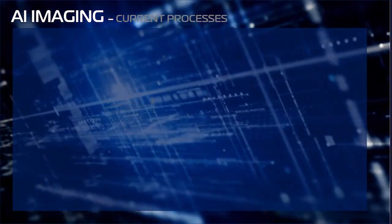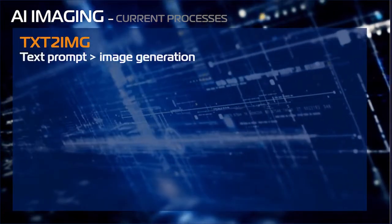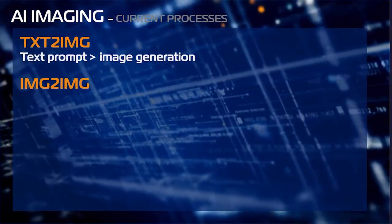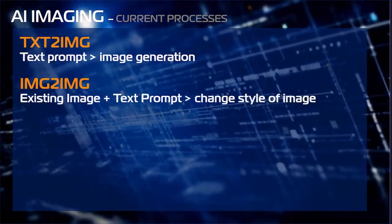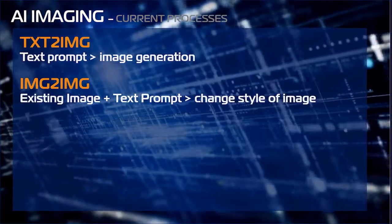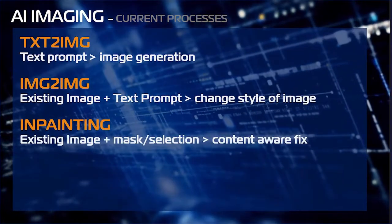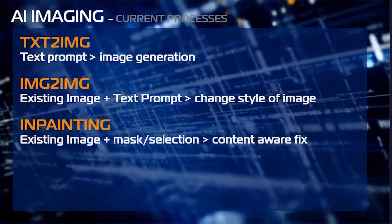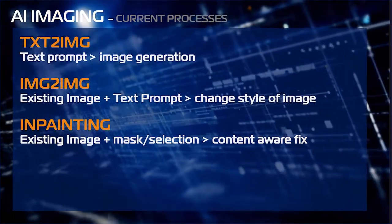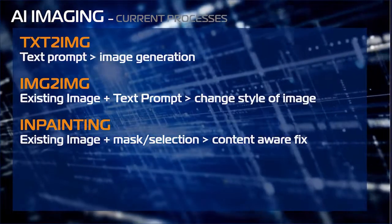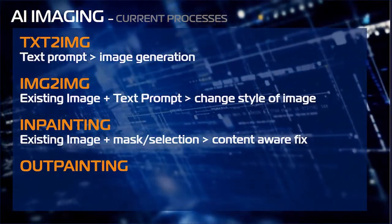Text to image is where we take a text prompt and generate an image based on that prompt. In image to image, we take an existing image via upload or URL, provide prompt text for the new image, and build a new image using those references — the closeness to the original can be guided. Inpainting is where we take an existing image, mask a selection, and fix or add new content — similar to content-aware fill in Photoshop, but much more powerful. Outpainting expands the boundaries of an image, adding details and objects where none existed before.